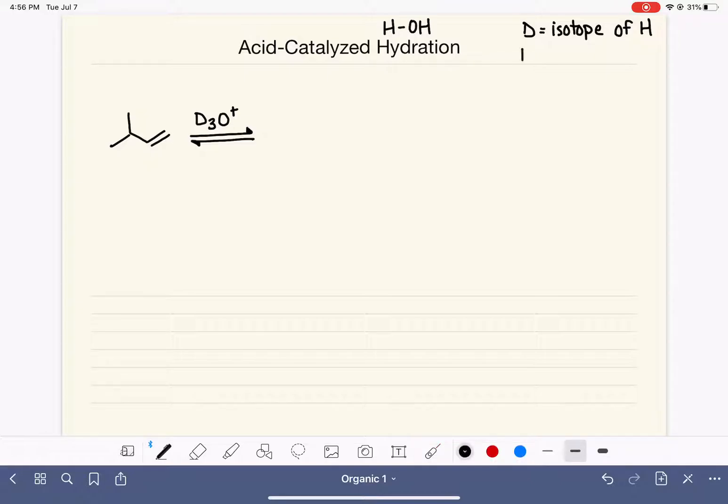So D3O+, which is what we're working with in this case, is the same thing as H3O+. It's just a specific isotope of the hydrogen atom.